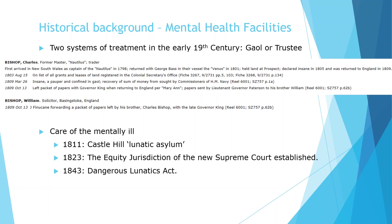In 1823, the equity jurisdiction of the Supreme Court was established. The Third Charter of Justice gave the Supreme Court responsibility to appoint guardians for both natural fools and those deprived of their reason by act of God, and to rule regarding the management of their estates. In 1843, the first colonial legislation relating to lunatics was passed: the Dangerous Lunatics Act. This act defined conditions under which a person could be apprehended and charged with lunacy, gave police authority to arrest people considered to be insane, and allowed relatives to apply to the government for an order to have a person admitted to an asylum.